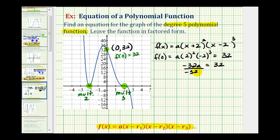Divide both sides by negative thirty-two. So we can see that a is going to be equal to negative one.